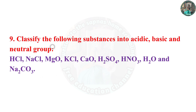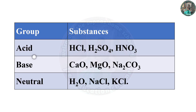Classify the following substances into acidic, base, and neutral groups. Acids: HCl, H2SO4, HNO3. Bases: CaO, MgO, Na2CO3. Neutral: H2O, NaCl, KCl.